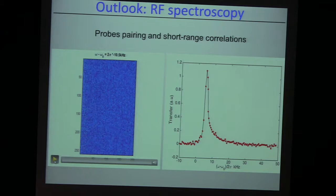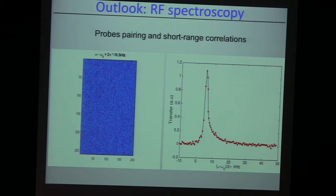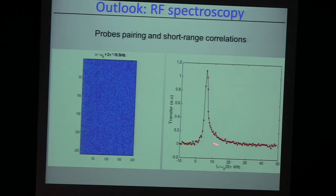We also have other cute things we can do — for example, radio frequency spectroscopy to measure the local response of the gas to a radio frequency pulse. Radio frequency is able to break fermion pairs. You can drive the transition from spin up to some other third empty state — we have more than two spin states available. Usually that energy difference is perfectly known — it's how our atomic clocks work — but in the presence of strong interactions, this energy is going to be shifted, for example, by molecular binding.